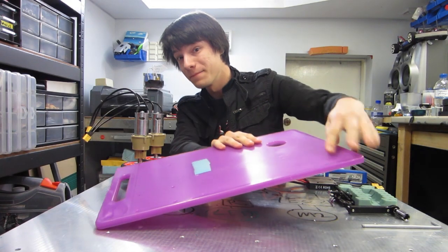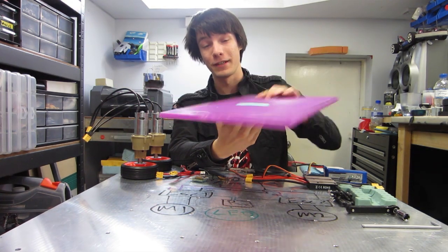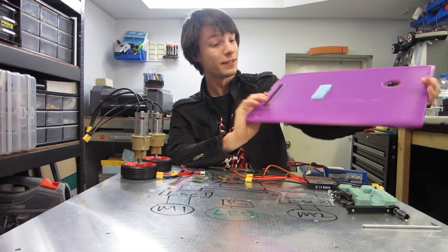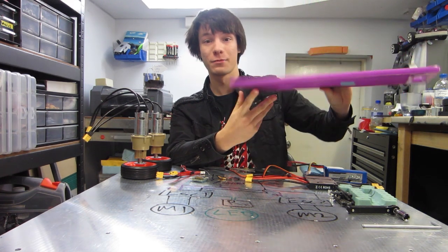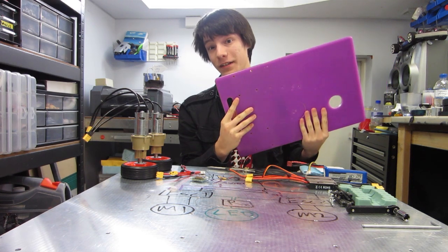This is going to be our chassis. It's actually just a chopping board, but these make really great robot bases and experimental parts because they're low cost, made from quite durable plastic, and really easy to machine and drill.